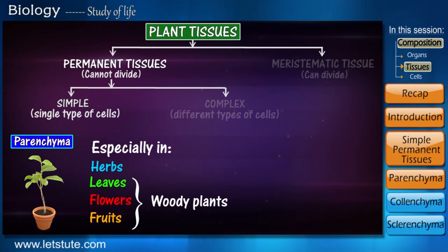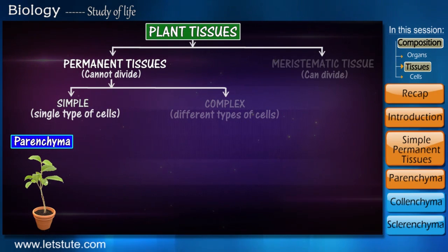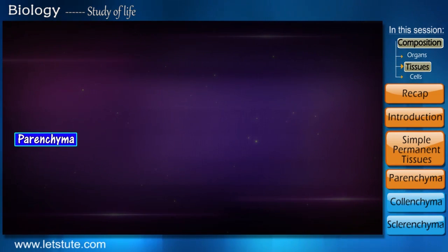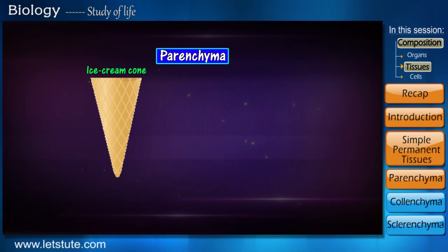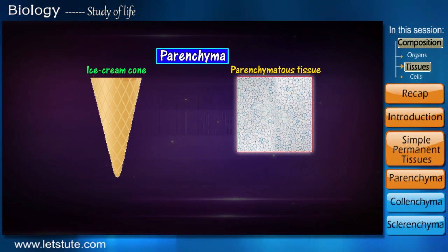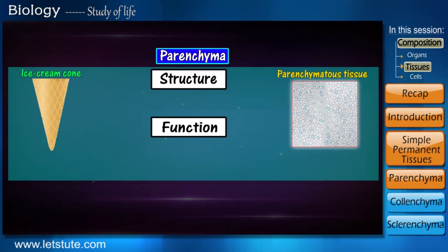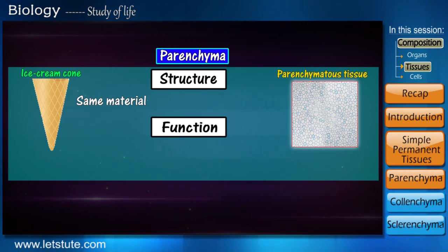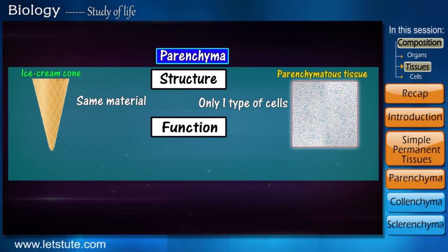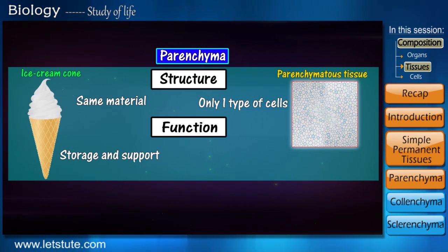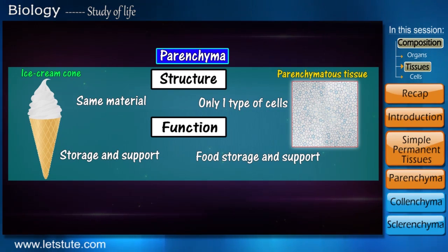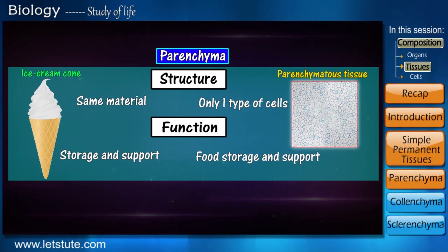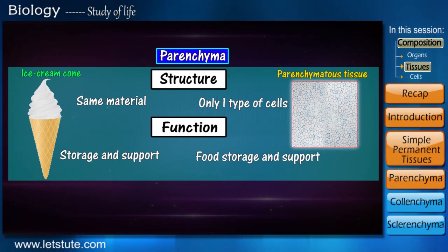Parenchyma is most abundant as it fills in the spaces surrounding other tissues and practically makes up the entire plant, especially the herbs, leaves, flowers, and fruits of woody plants. An ice cream cone can be compared to parenchyma both in structure and function. Just as cones are made of the same material, parenchyma is made up of only one type of cell. Also, as the cone helps in storing ice cream and providing support, similarly parenchyma helps in storing food in the form of nutrients and water, as well as providing support to the plant.